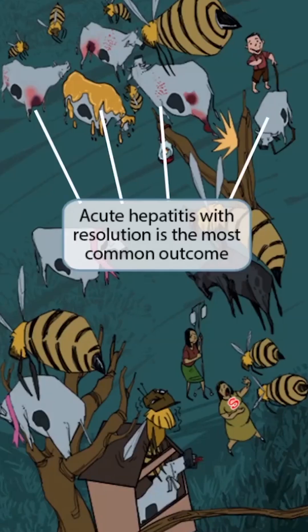To emphasize that acute hepatitis with resolution is the most common outcome, we have shown several bees with several of these cows representing acute hepatitis. Acute hepatitis with resolution, whether or not it's symptomatic, is more common than liver failure, chronic hepatitis with or without cirrhosis, or hepatitis that becomes cancer.